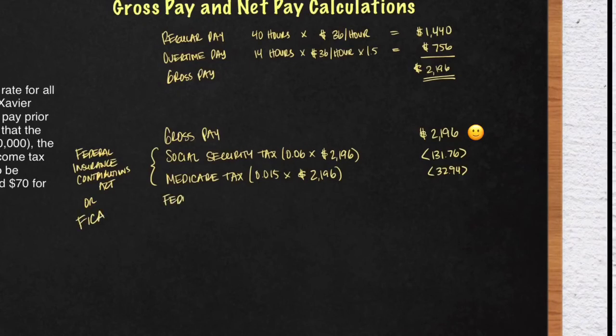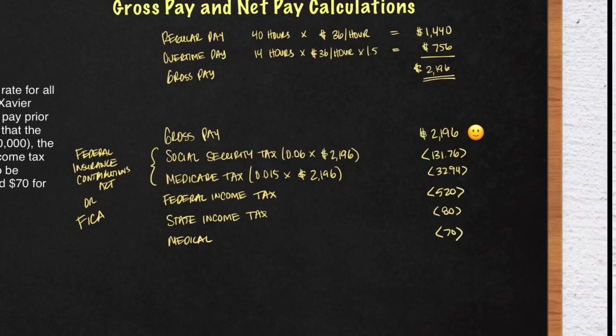Our next deduction is the Federal Income Tax. Now I know this problem is a very basic problem. In a payroll accounting class, you will learn how to calculate the Federal Income Tax. But in this case, it's just a given number of $520. And the same with state income tax. Here it's a deduction of $80. Lastly, he has one more deduction for medical coverage. For medical coverage, his deduction is $70.